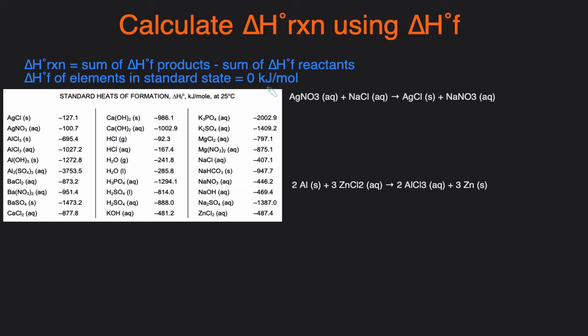So if you see an element in the reaction and it's not given in the table, typically it will be zero kilojoules per mole. All right, so let's jump into two examples and see how to use this equation.